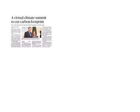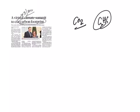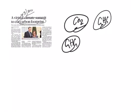The next article is 'A virtual climate summit to cut carbon footprint.' This comes under GS Paper 3 under the topic of Environment. Carbon footprint is the quantity of carbon dioxide released into the atmosphere as a result of activities done by a community, an event, an individual, or an organization. It refers to the greenhouse gas emissions by an entity, event, product, or person, expressed in terms of the amount of carbon dioxide or its equivalent of other greenhouse gases emitted. The most common unit is carbon dioxide equivalent.